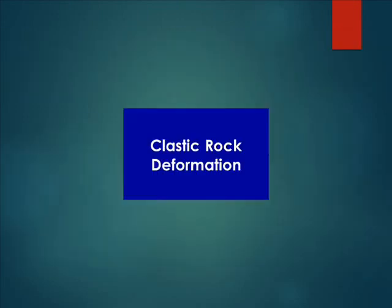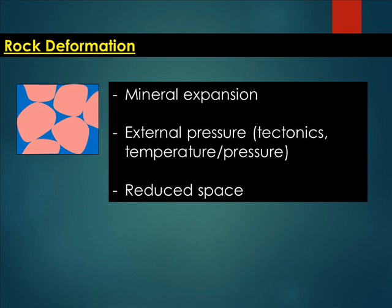I'll take you through plastic rock deformation and what typically happens. When you have grains together within a mass of rock, a couple of things can happen. Mineral expansion can happen — if you have clay minerals or other minerals that tend to increase in size. External pressure, resulting from tectonics or changes in temperature or pressure, can also significantly deform rocks. In all of this, the space available for grains or matrices within the rock mass can change.